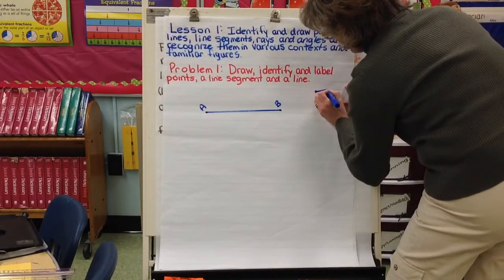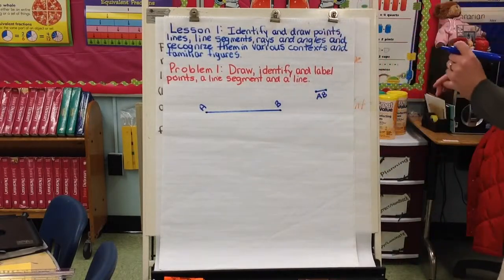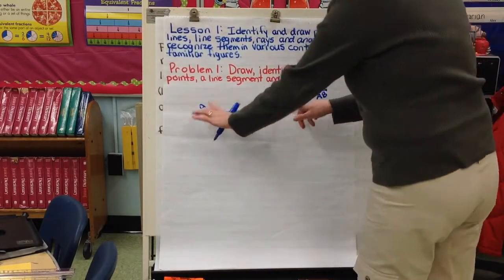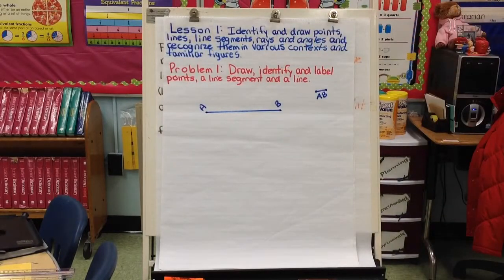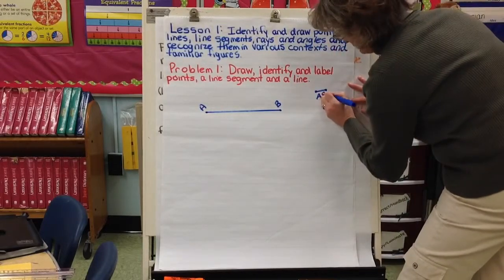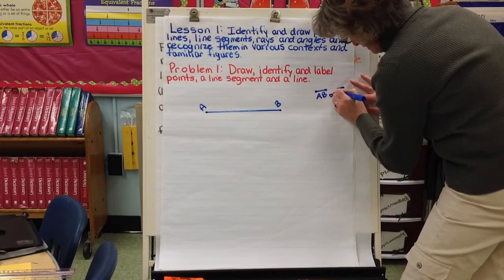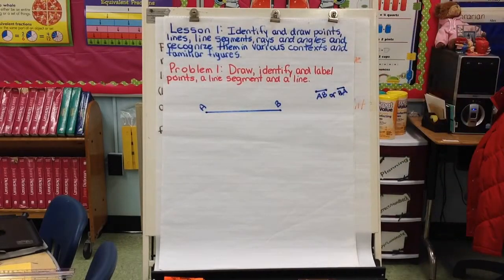And this is how we would write that. Notice our symbol has two points at the end, because this does not extend forever. This is part of a line. We could also call it line segment B, A. The order in this case does not matter.